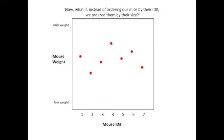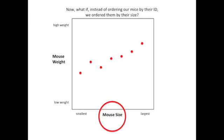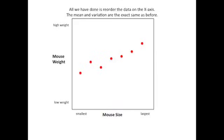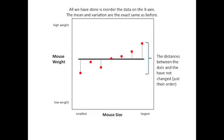Now, what if instead of ordering our mice by their identification number, we ordered them by their size? Instead of using identification number on the x-axis, we have mouse size with the smallest size on the left side and the largest size on the right side. All we have done is reorder the data on the x-axis. The mean and variation are the exact same as before. The distances between the dots and the line have not changed, just the order of the dots.